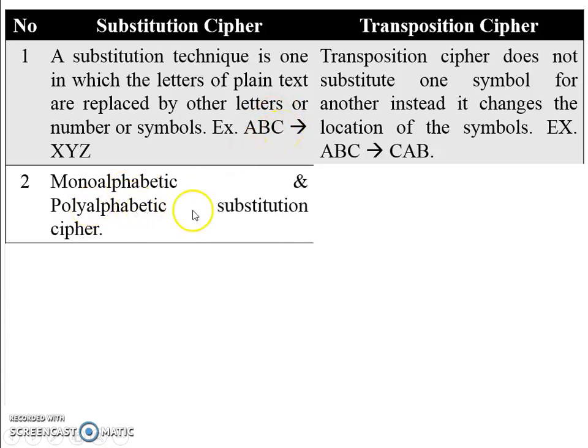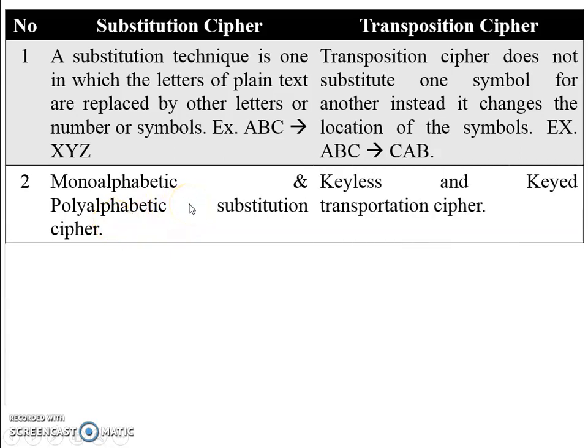Mono-alphabetic and poly-alphabetic substitution are types of substitution cipher. Keyless and keyed transposition cipher are types of transposition cipher. We can also say rail fence and columnar transposition.